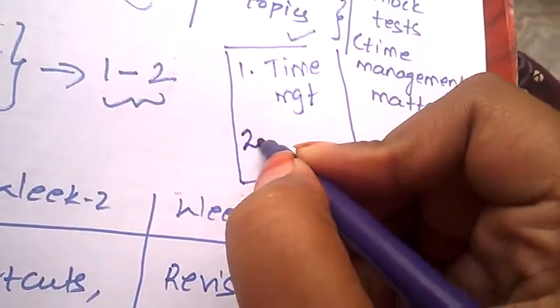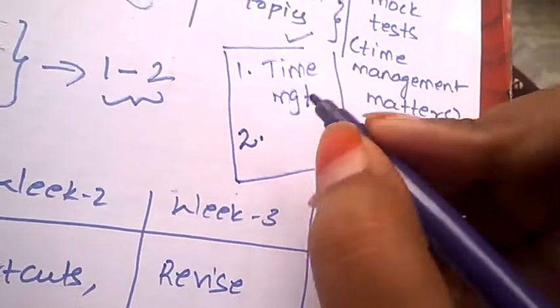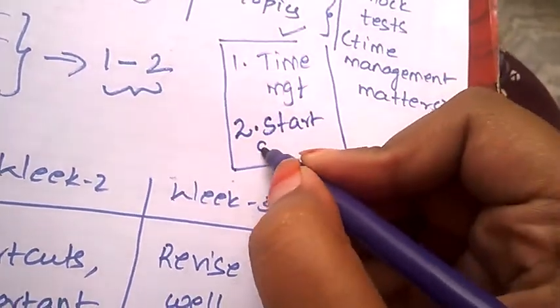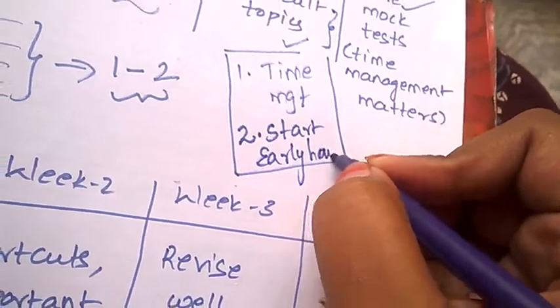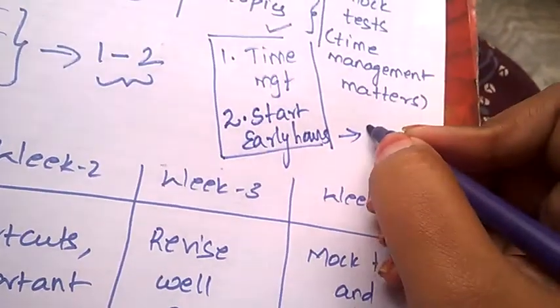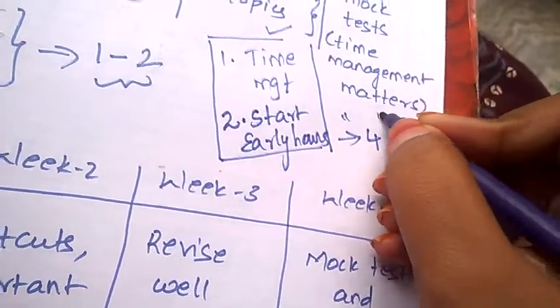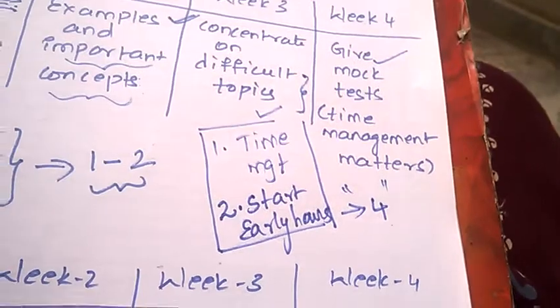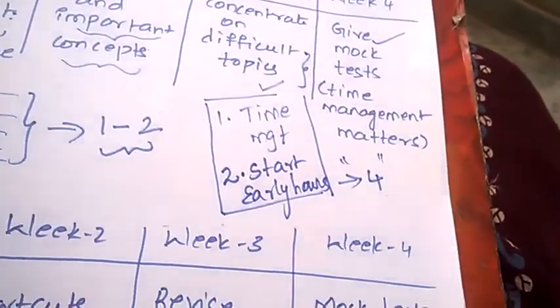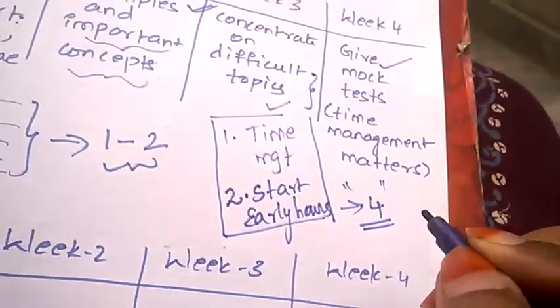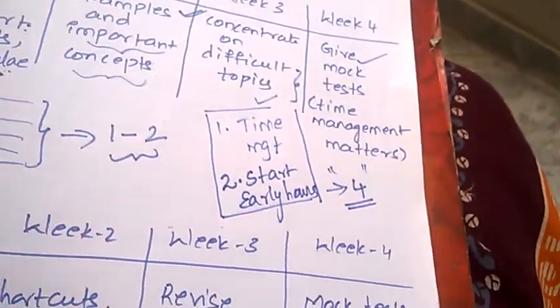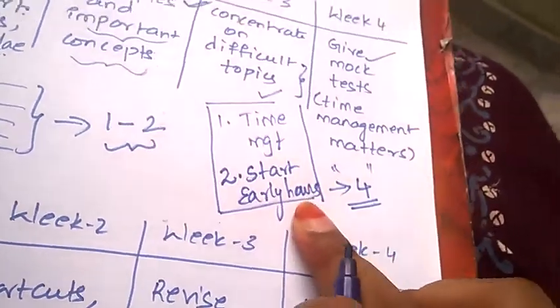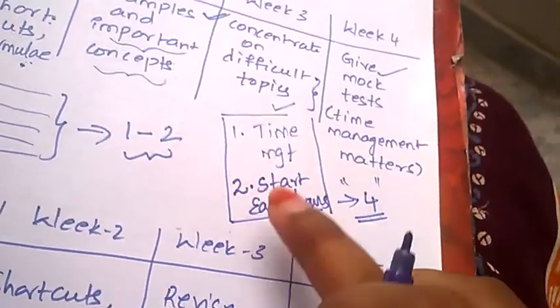The second tip is start preparation with early hours. Start your revision from 4 AM only, like early morning 4 o'clock. If you start your revision at that time, all the things which you study you will remember for a longer duration. So always start preparing your schedule from the early hours.